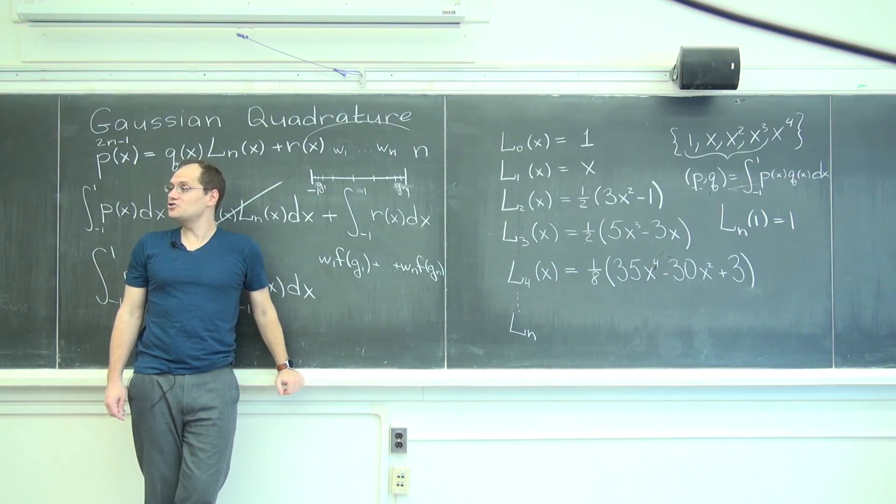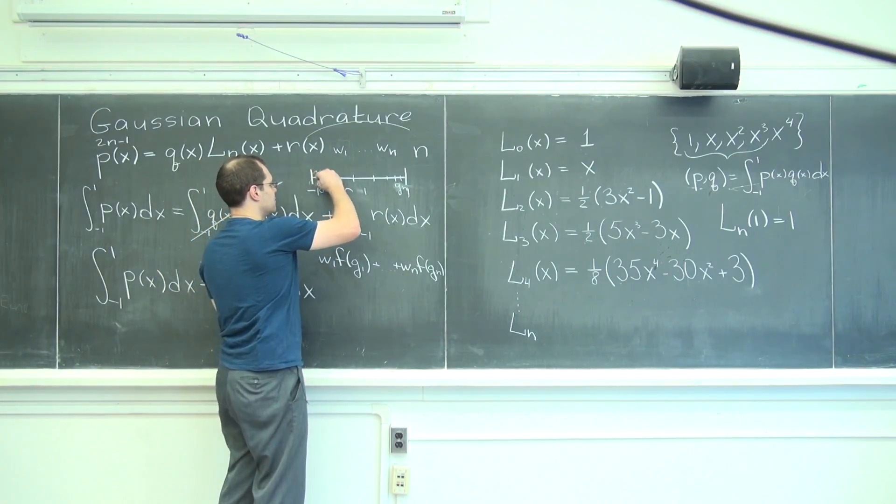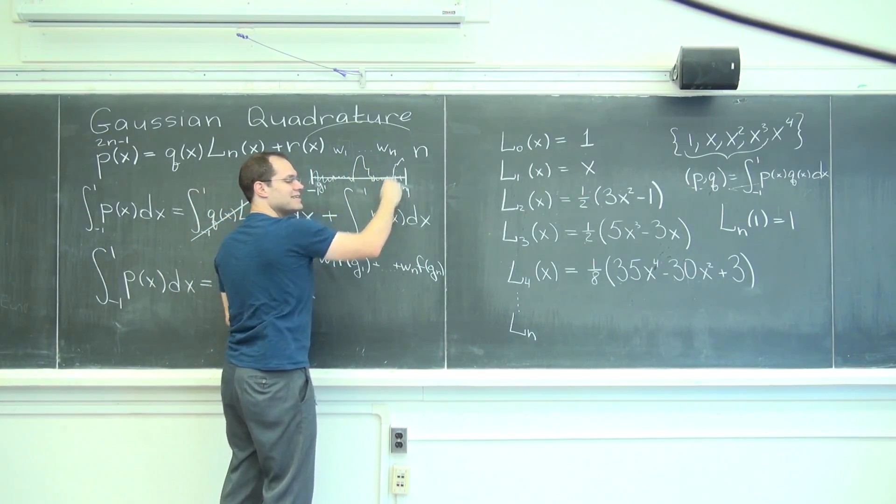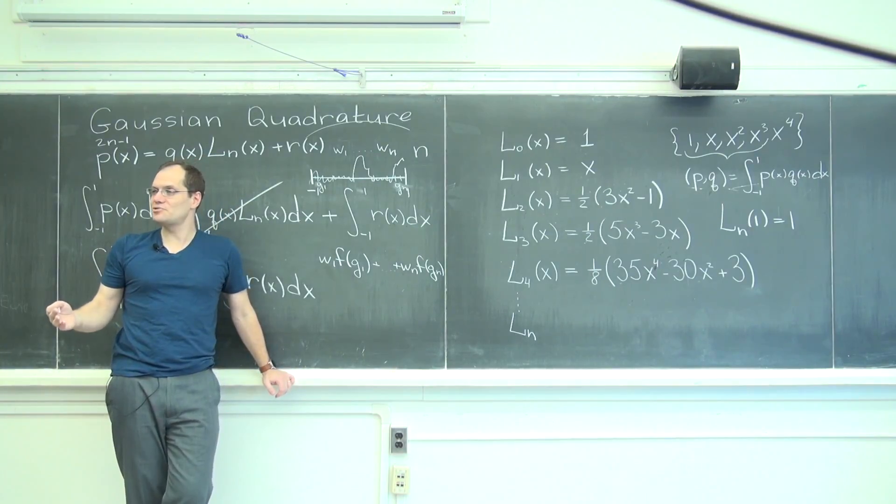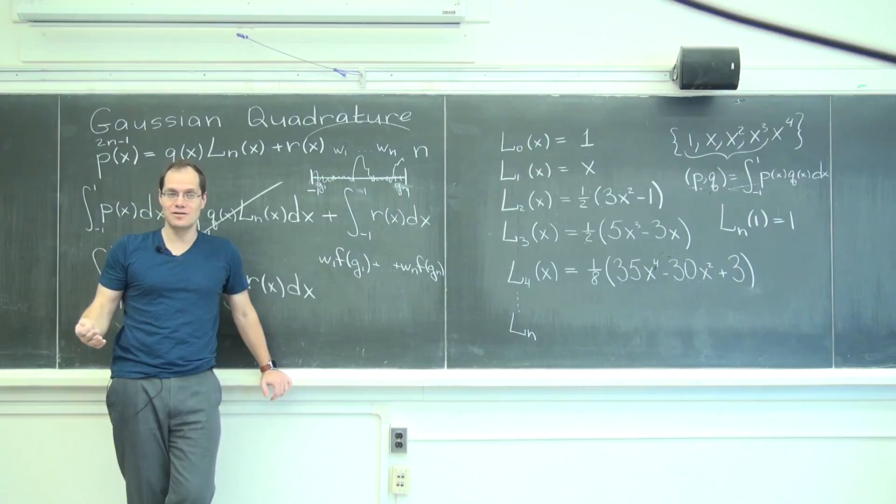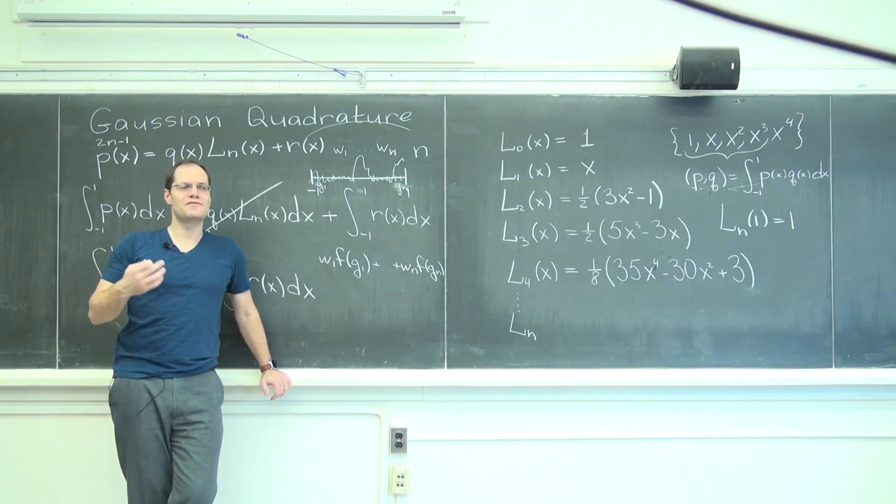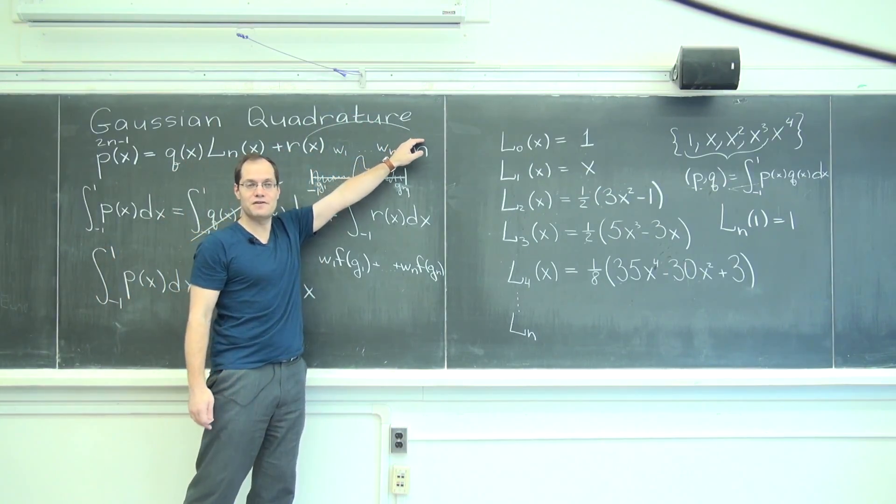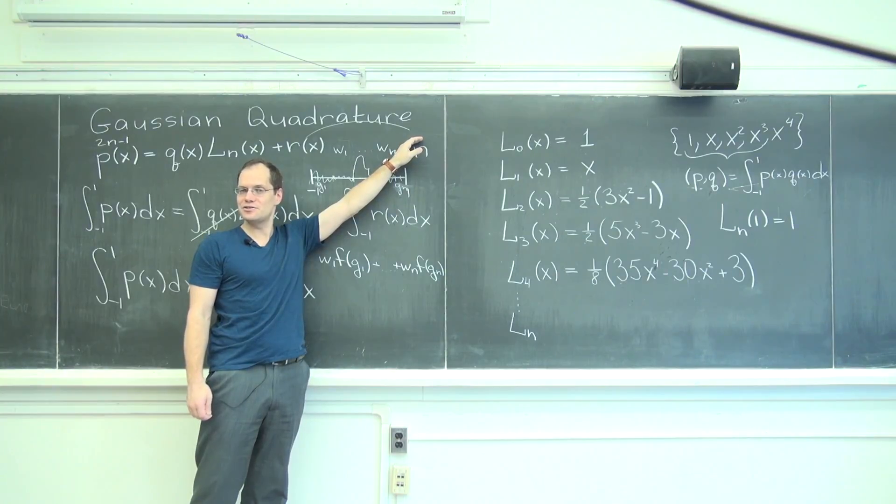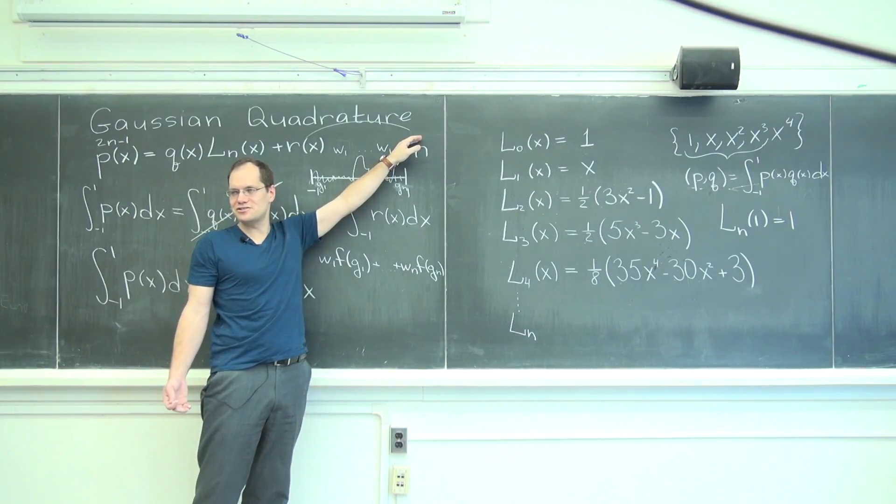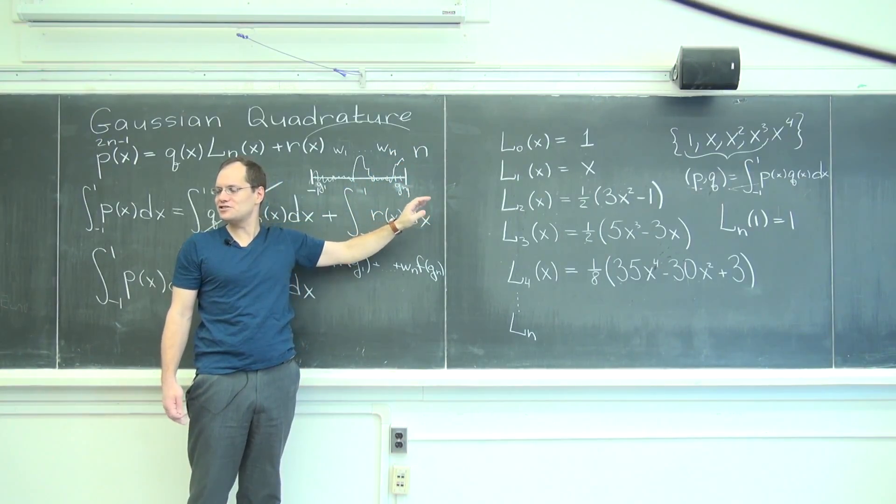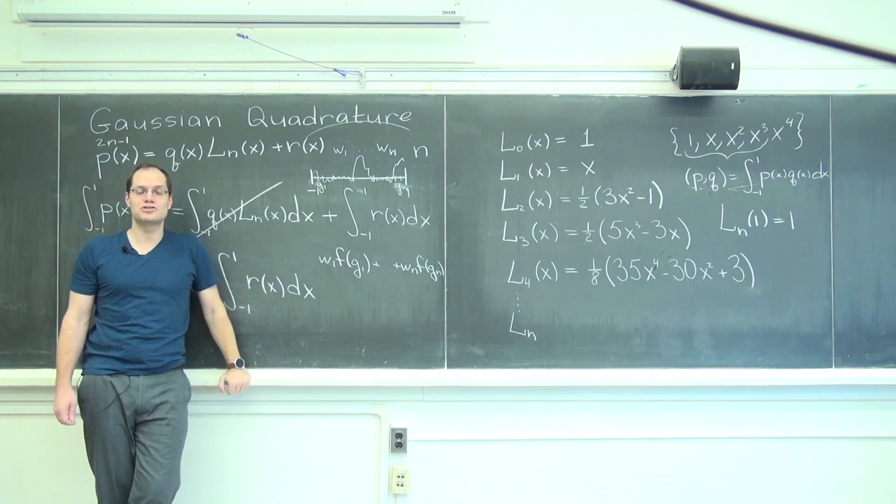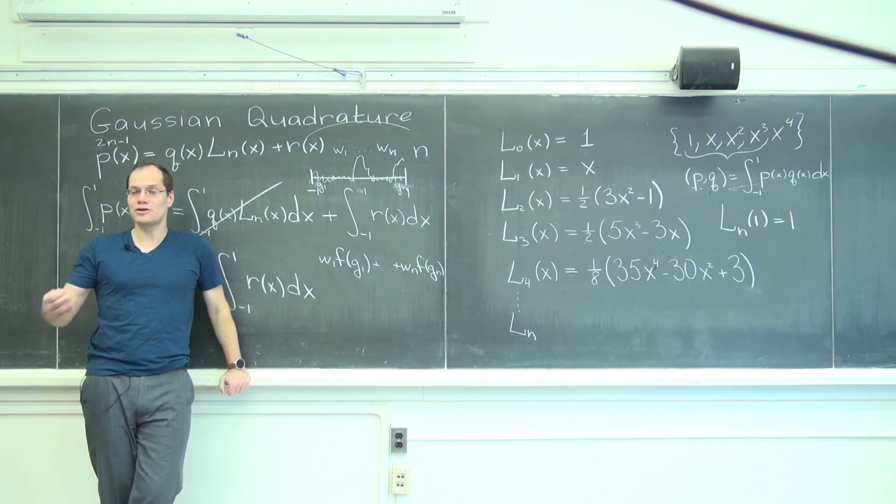If I had chosen this function, which has more than 19 roots, right? Then 19th degree polynomials would not approximate it accurately at all. And then Gaussian quadrature will fail. So in showing off the magic of Gaussian quadrature, I was careful to choose a function that can be approximated very well by 19th degree polynomial. And that's why it worked so well. And most functions are like that. You have to think really hard for a function that's not like that.